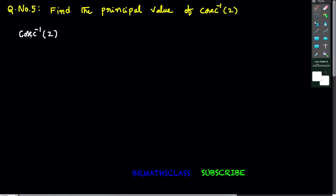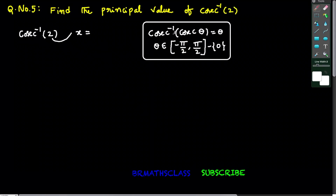If you observe this, it is of the form cosecant inverse of x. I want to do this problem using this formula: cosecant inverse of cosecant theta equals theta. This formula holds good when theta belongs to the closed interval minus pi by 2 to pi by 2, except 0.